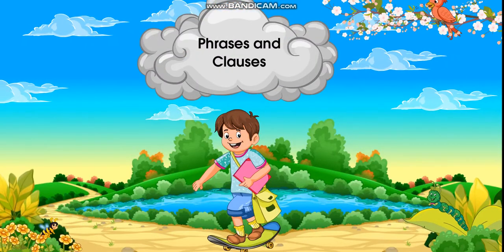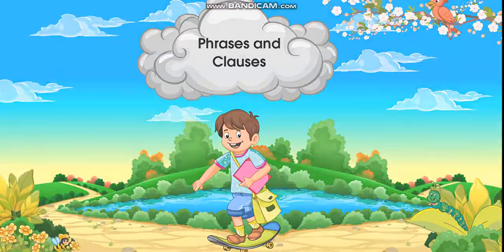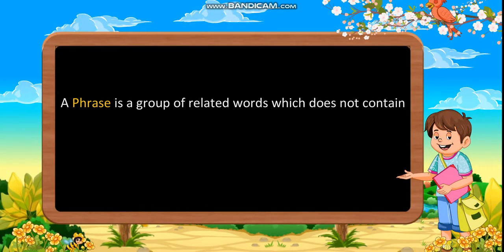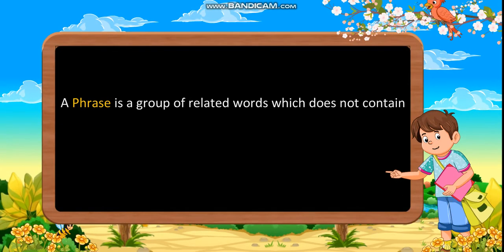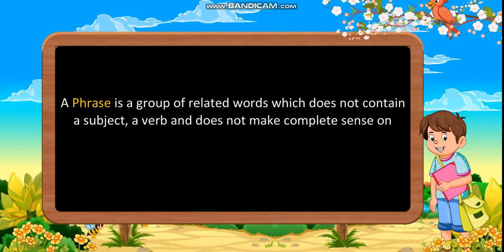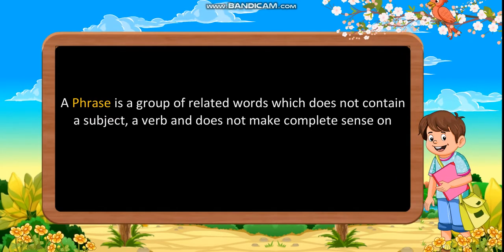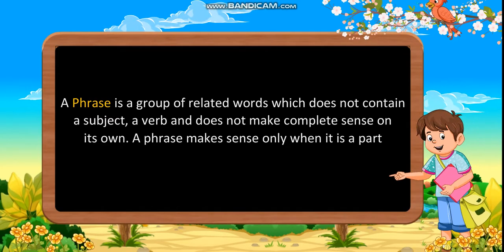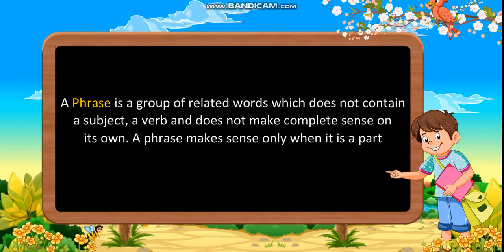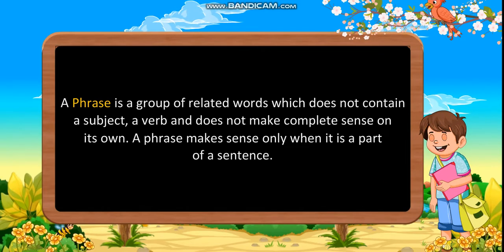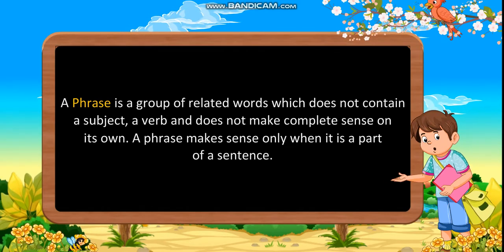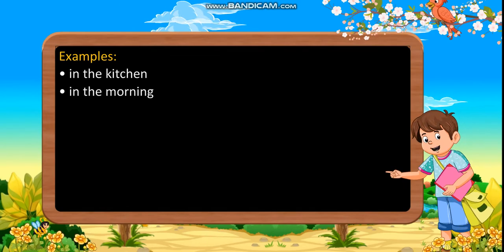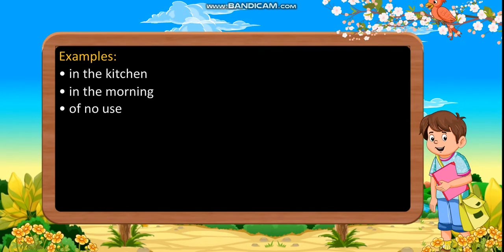Phrases and Clauses. A phrase is a group of related words which does not contain a subject or a verb, and does not make complete sense on its own. A phrase makes sense only when it is part of a sentence. Examples of phrases: 'in the kitchen,' 'in the morning,' 'of no use.'